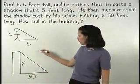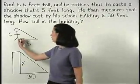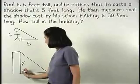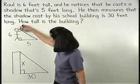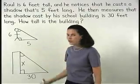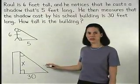Notice that the two triangles that we've drawn are similar because they both have right angles and the shadows are cast at the same angle. So the triangles are similar by the angle-angle similarity postulate.